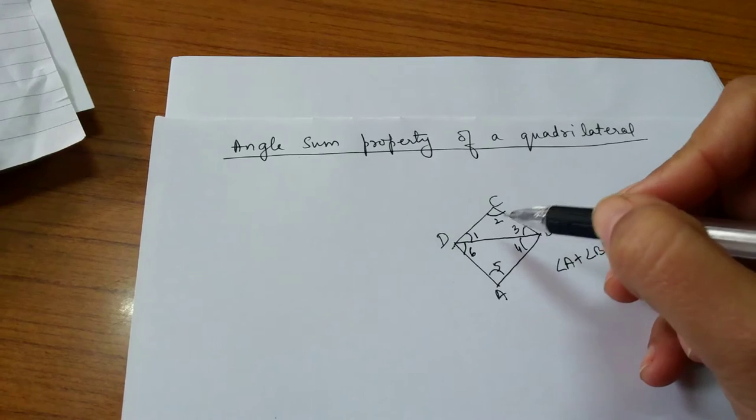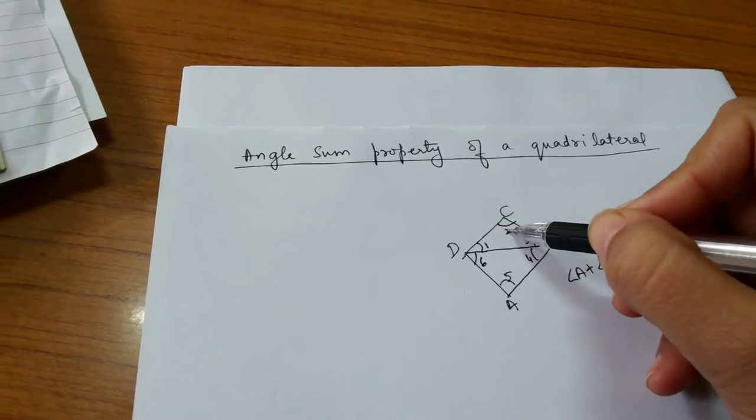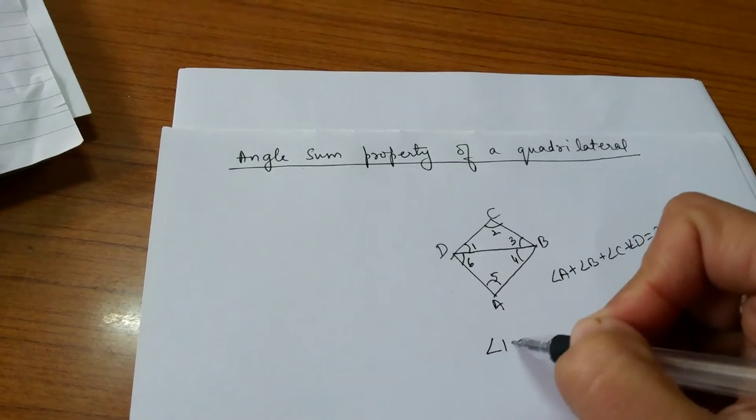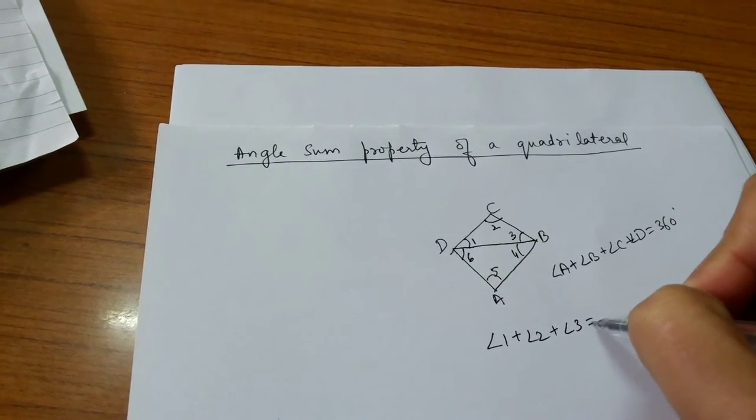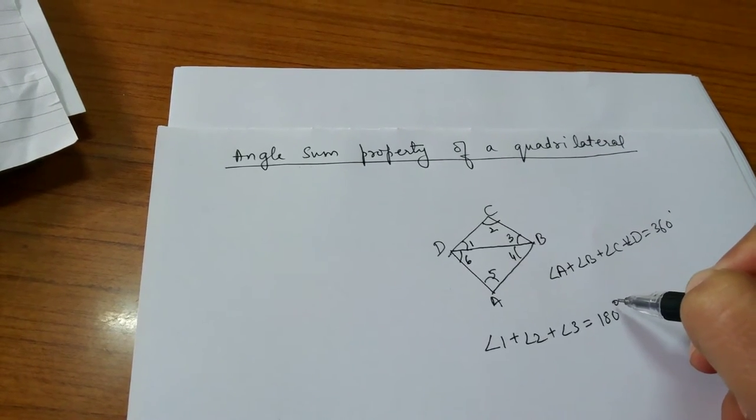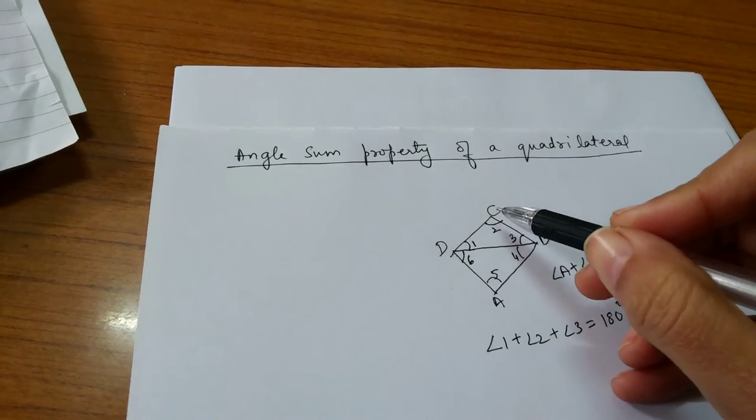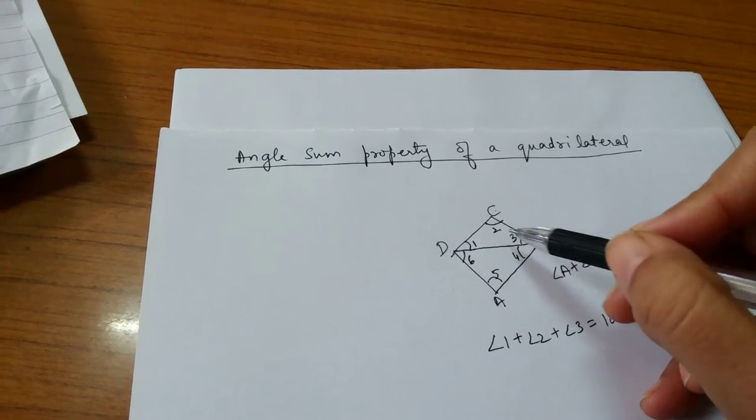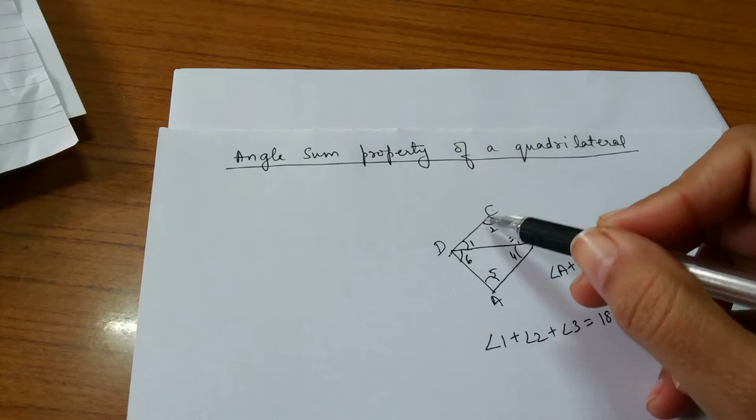What is the sum of angle 1, angle 2, and angle 3? Angle 1 plus angle 2 plus angle 3 is 180 degrees. Why? You know that in triangle CDB the sum of interior angles is 180 degrees.